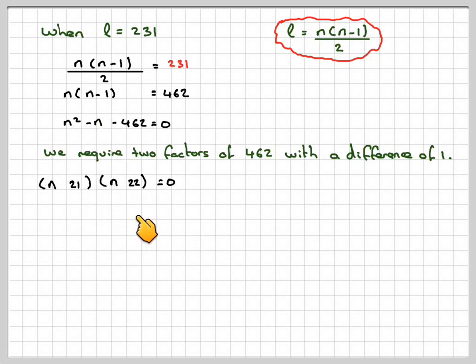And then 22 minus 21 make, sorry, 21 minus 22 would make minus 1. So that one has to be plus, it has to be minus. And then we're going to get either this equals 0, so it gives N is minus 21. That doesn't make sense in the context of the problem. So that's not possible.